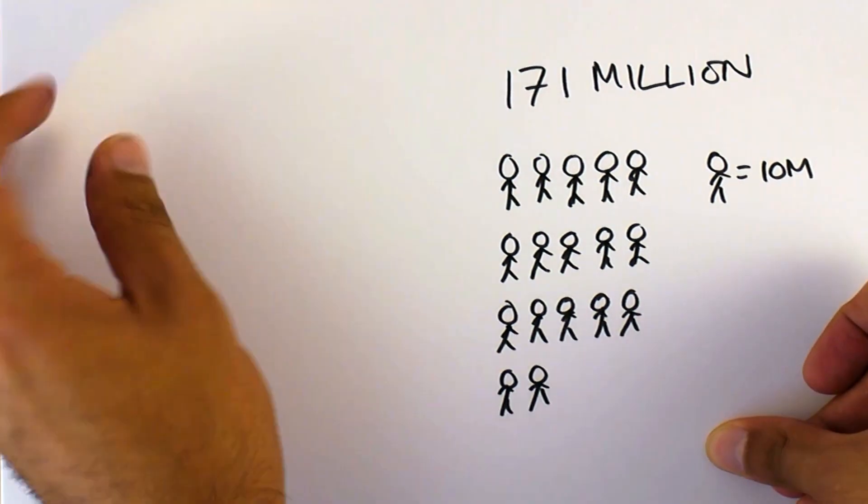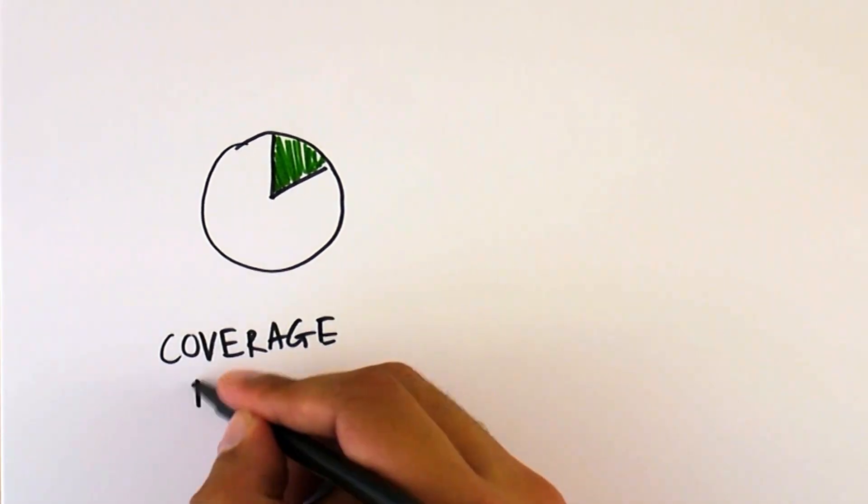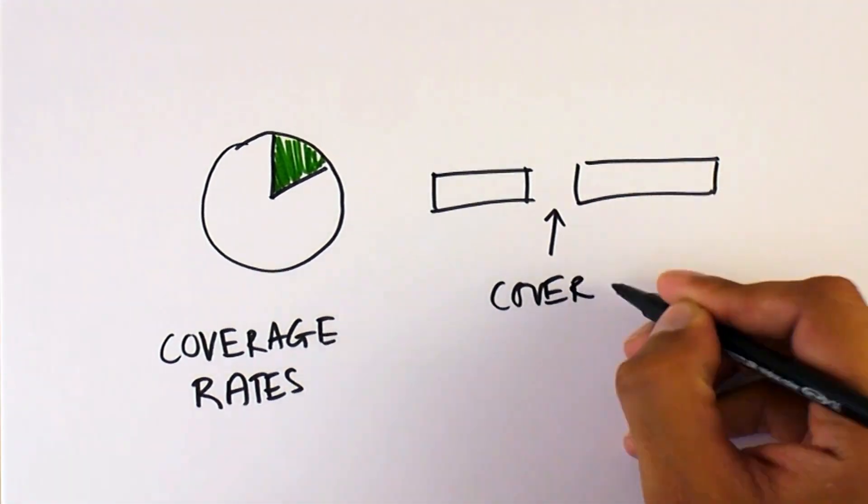Now how do we measure all this? To start with, we track coverage rates and coverage gaps for access to basic services among children. We've also used this data to develop the Human Opportunity Index.